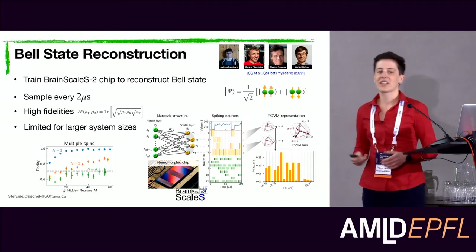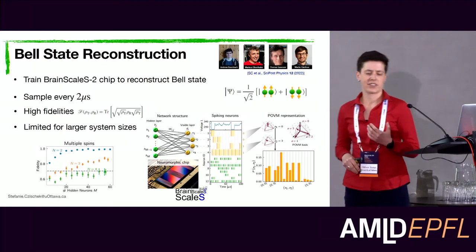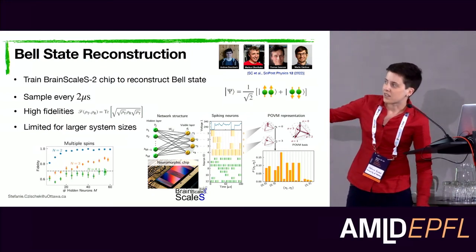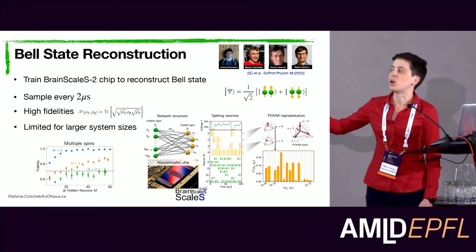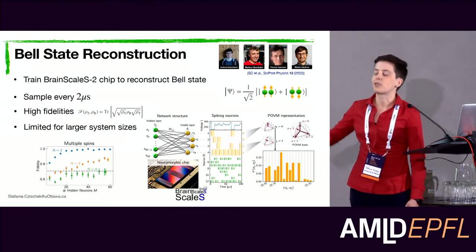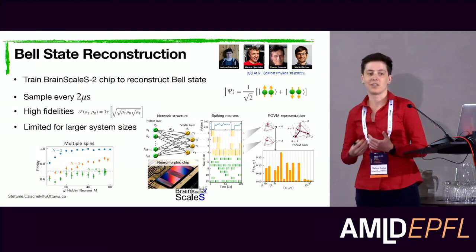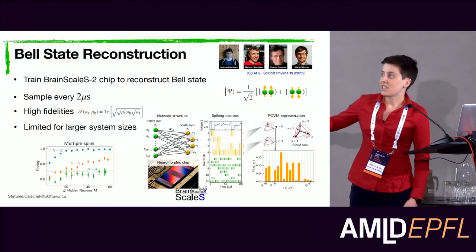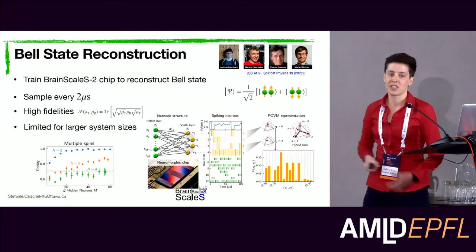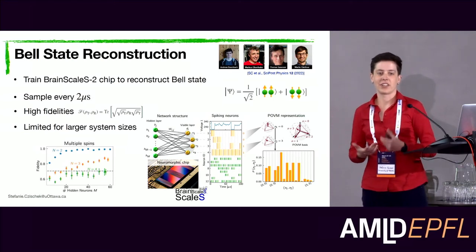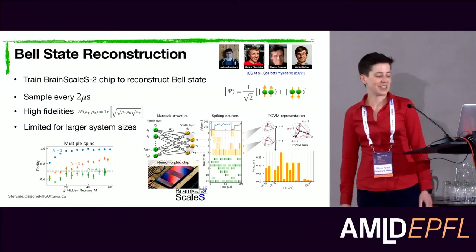Encouraged by the Bell state result, we moved to larger systems: the Greenberger-Horne-Zeilinger (GHZ) state, the generalization of the Bell state — the equal superposition of the all-up and all-down state. For 3 and 4 qubits, fidelities increase with more hidden neurons, but are much lower than for 2 qubits and far from 1. We need far larger network sizes to accurately reconstruct larger qubit systems. We stopped at slightly fewer than 60 neurons not because we were satisfied, but because we had used all neurons available on the chip — most were noise neurons needed for stochastic sampling behavior.